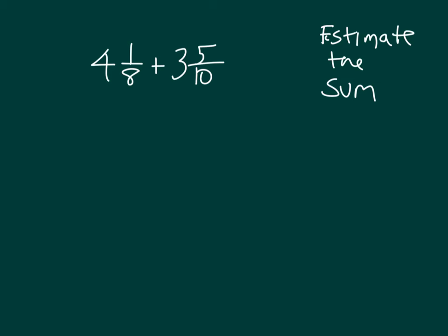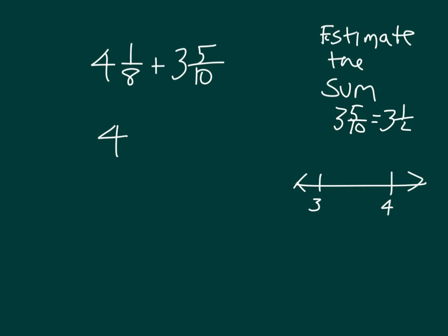Here we're asked to estimate the sum of 4 and 1 eighths plus 3 and 5 tenths. When we round each of these mixed numbers, 4 and 1 eighths rounds to 4. For 3 and 5 tenths, if we look at it on a number line, we recognize that 3 and 5 tenths equals 3 and 1 half — right in the middle. 3 and 1 half is a benchmark fraction, so we keep it as our estimate. They are the same value.